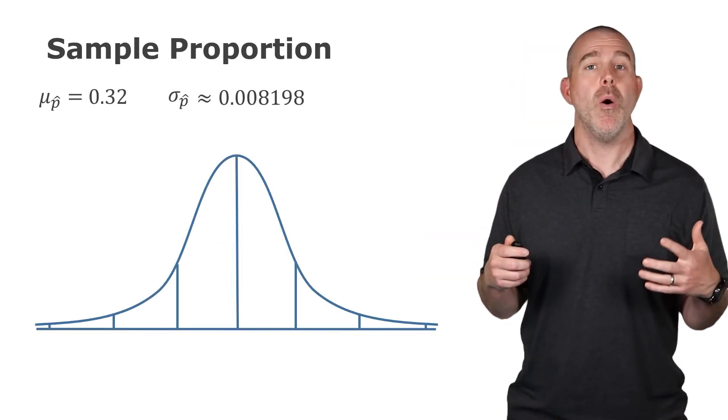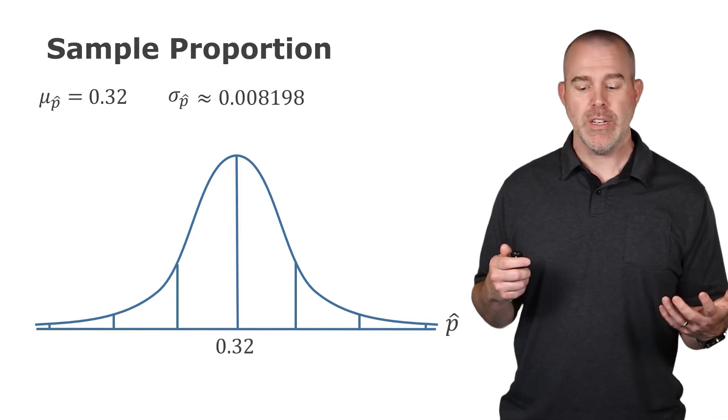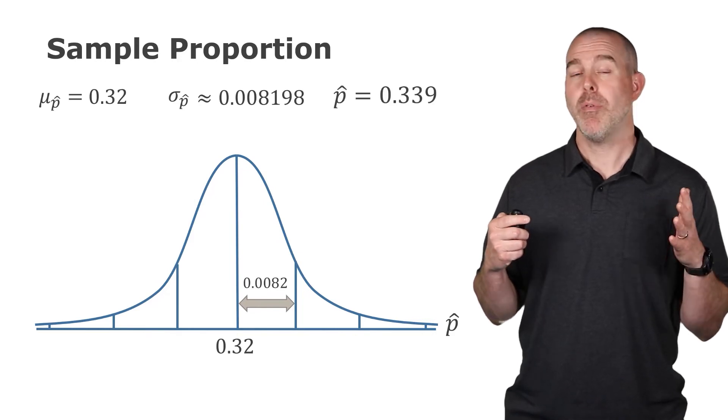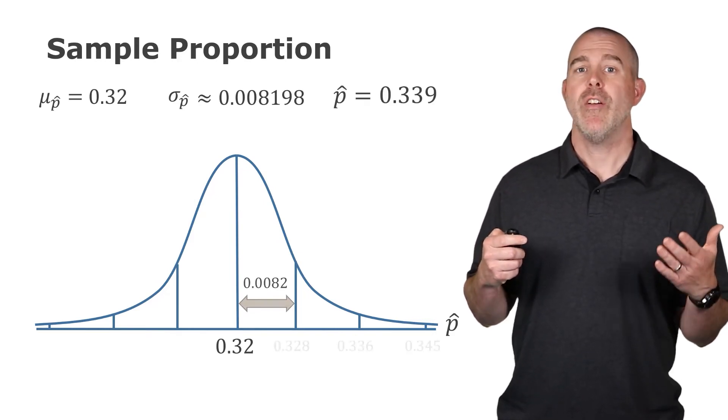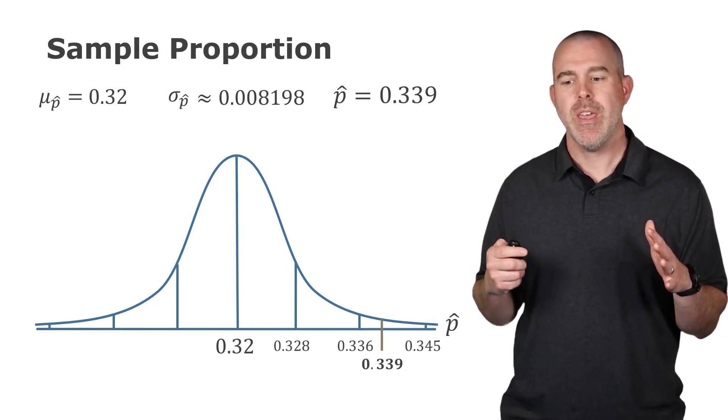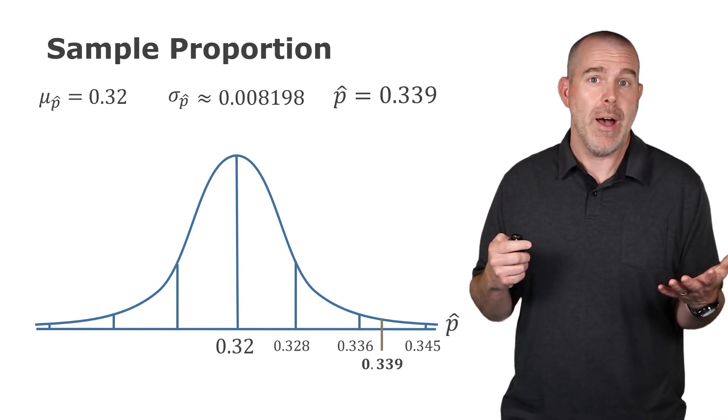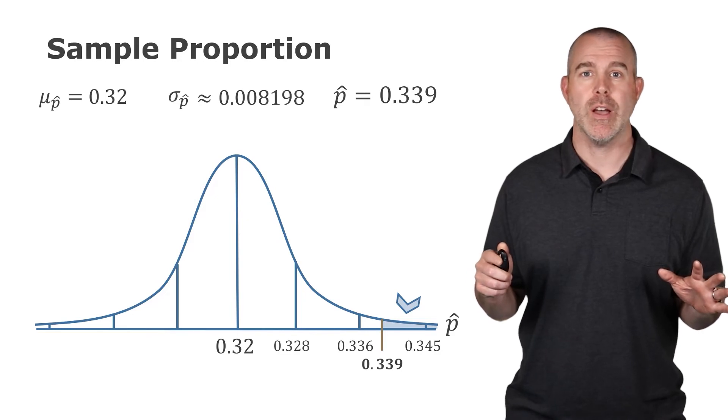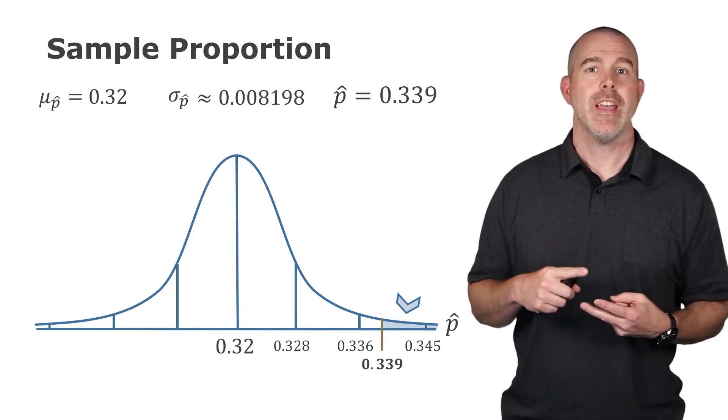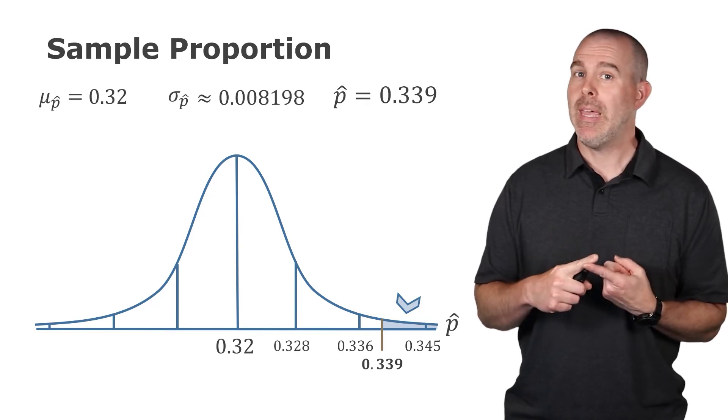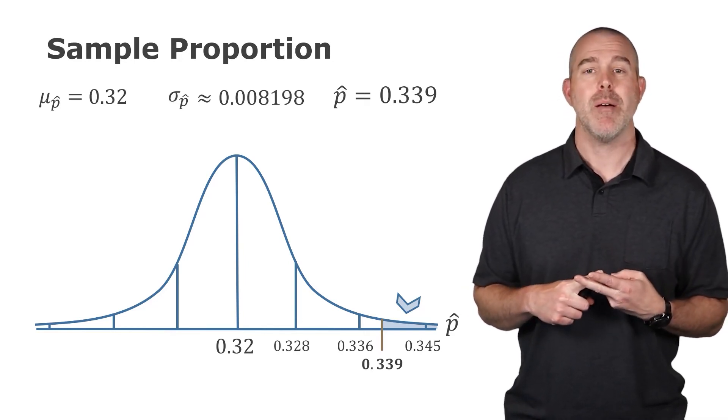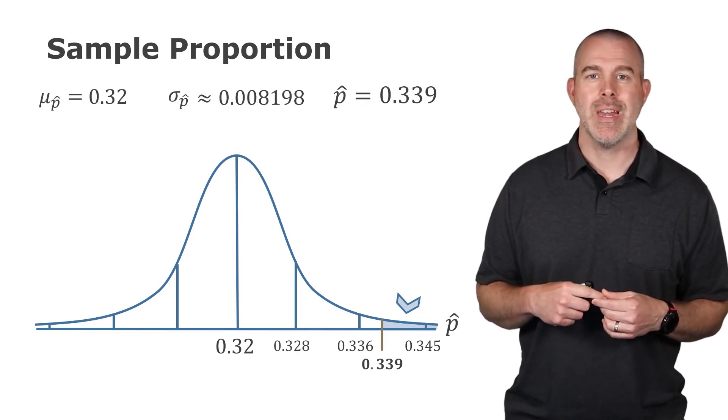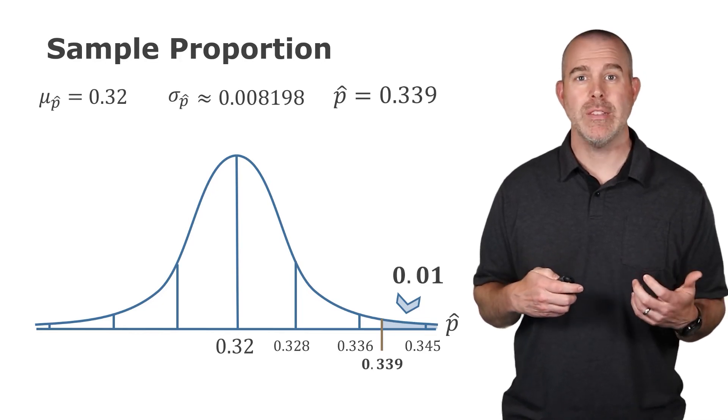Let's calculate a probability then. We know our distribution. We should have 0.32 in the middle, and then our standard deviation is about that 0.008198. Our sample proportion is 0.339. If we kind of figure out where those standard deviations would be, we can see where the 0.339 is, kind of far out there. Let's calculate the probability of being to the right. We'll do this in StatCrunch. It's a normal probability question, same thing as always. Stat, calculators, normal. Plug in our mean, that's 0.32. Our standard deviation, that's that 0.008198. We want to find the probability of being to the right of 0.339. Hit compute, and we get 0.01.